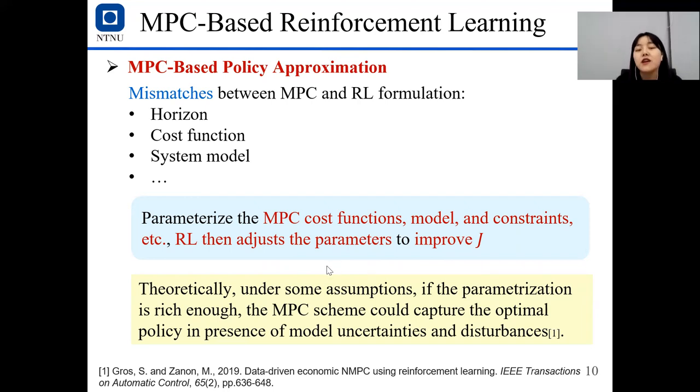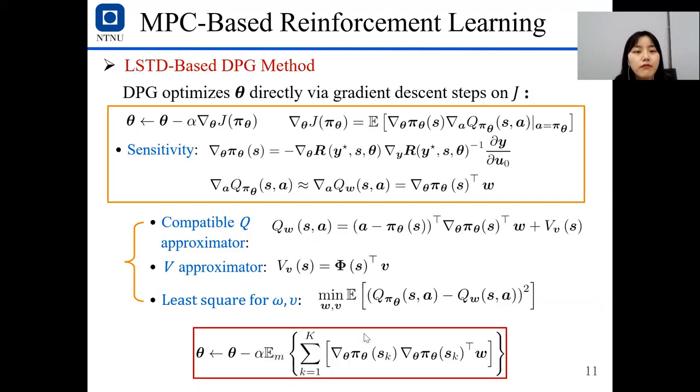Actually, theoretically, under some assumptions, if the parameterization is rich enough, it means if we have more theta to parameterize the MPC scheme, the MPC should capture the optimum policy in presence of model uncertainties and disturbance. And this theory is mathematically proved in this paper. And if you are interested, you can take a look.